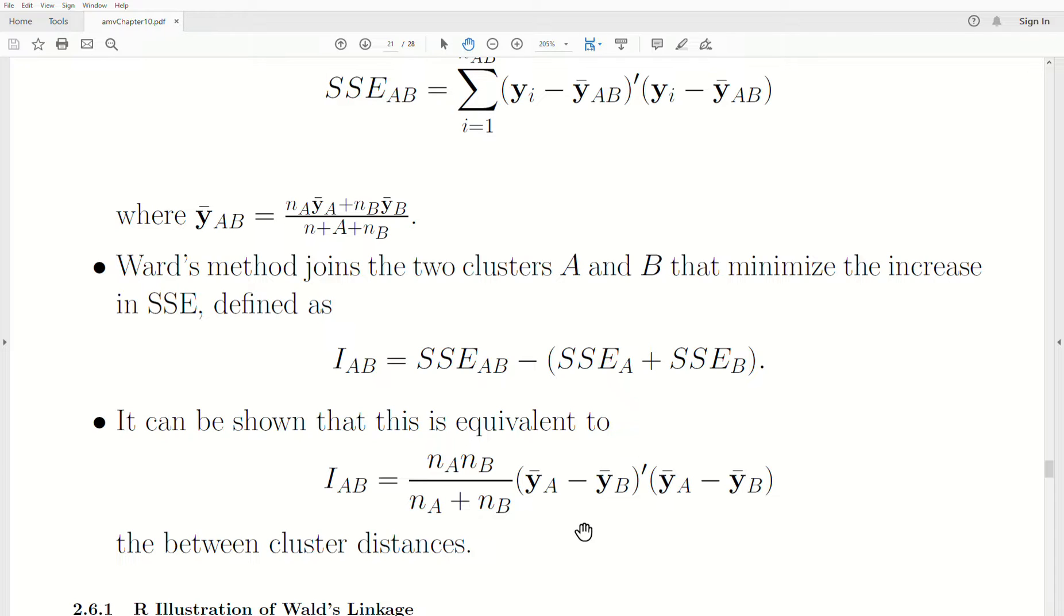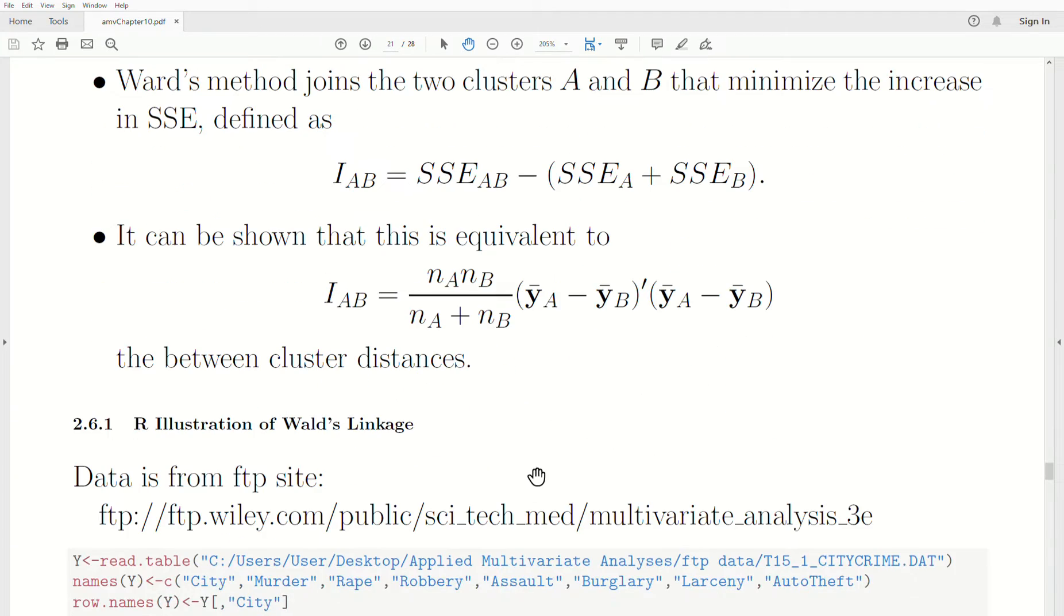So you can think of it in either way. We're joining two clusters that have the minimum between cluster distances, weighted by their sample sizes or the number of elements in each cluster.